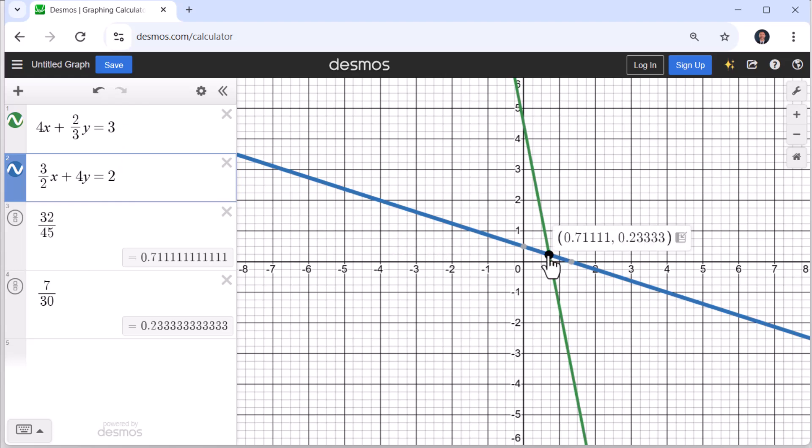Entering the two linear equations, we get the two lines on the right. Clicking on the point of intersection, we can see x equals 32/45 and y equals 7/30 is the correct solution. I hope you found this helpful.